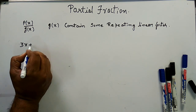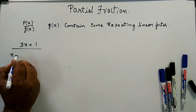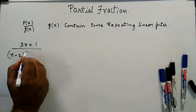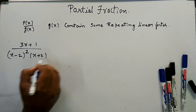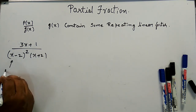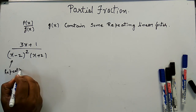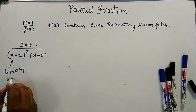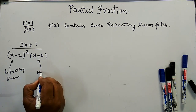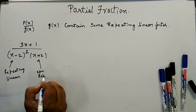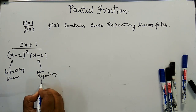I am taking this example: (3x + 1) / [(x - 2)² · (x + 2)]. Now (x - 2)² is the repeating linear factor and (x + 2) is the non-repeating linear factor.